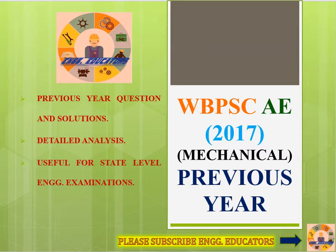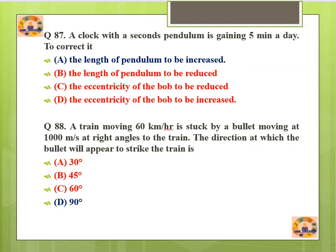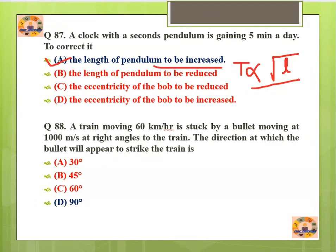Question number 87: A clock with a second pendulum is gaining five minutes a day. To correct it, we need to increase the length of the pendulum. We know that time period T is proportional to the square root of length, so we need to increase the length of the pendulum.